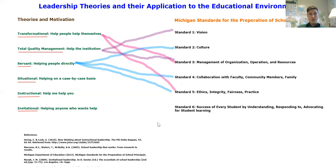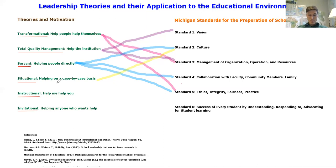Moving on — situational leadership is about helping people on a case-by-case basis, adapting to the behaviors of the followers. To me, this fits perfectly with knowing the culture of the place. The standard it meets best is standard two, because how you help people on a case-by-case basis requires you to know them. The text goes into requiring different types of responses depending on how well followers know and can do something. Knowing the culture is increasingly important for a situational leadership approach.